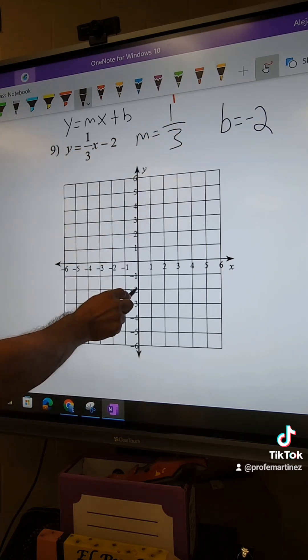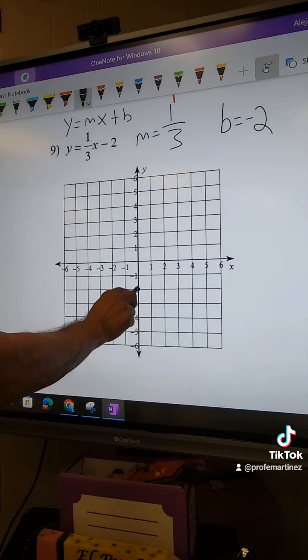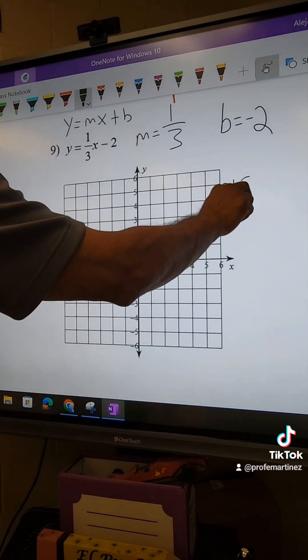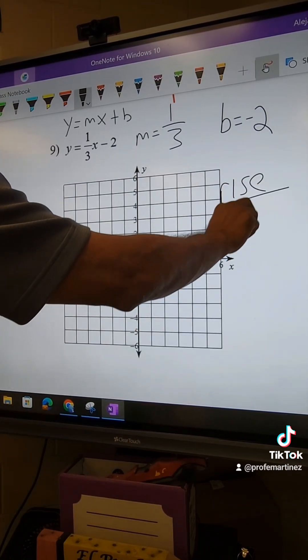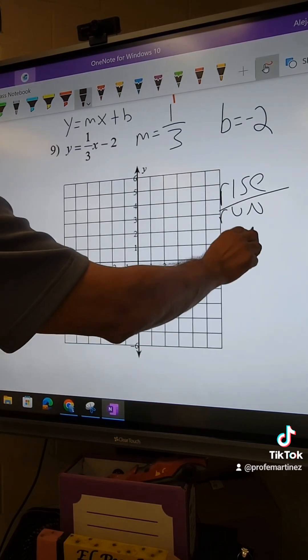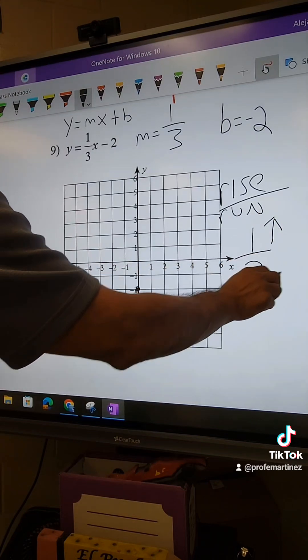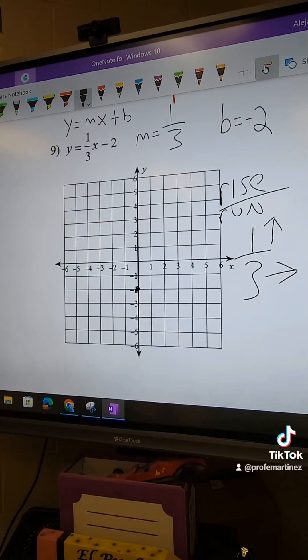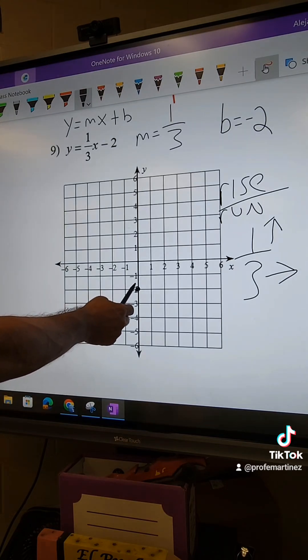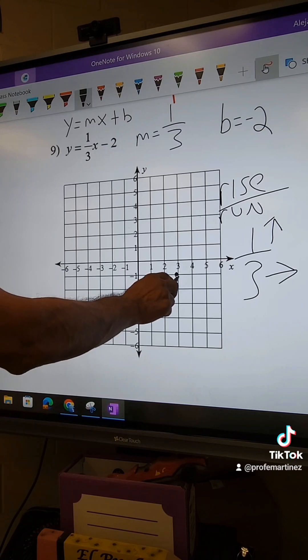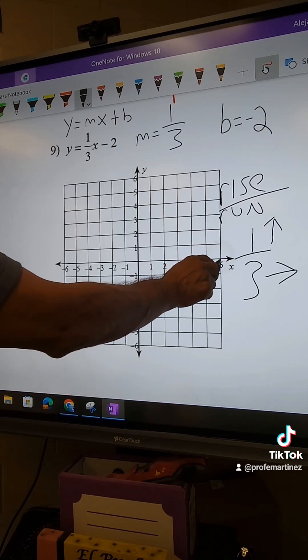So we put negative 2 here, and from there we're going to do the rise over run. Don't forget the rise over run. Okay, one over three. They're both positive, so one's going up and this one's going to the right. And so starting here, you start plotting the points of one, and then one, two, three. And you can do it again: one, one, two, three.